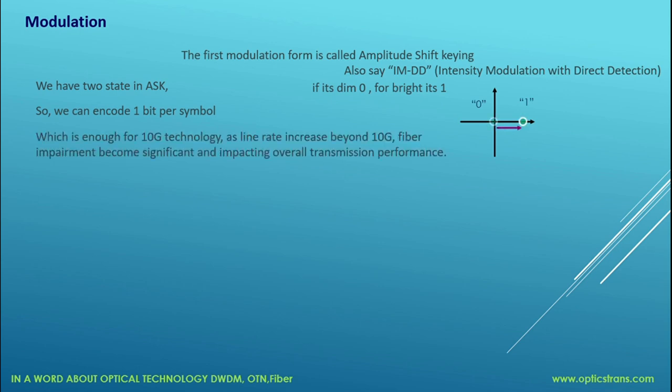As line rate increases beyond 10G, fiber impairments such as chromatic dispersion, polarization mode dispersion, optical noise, and nonlinear effects become significant and impact overall transmission performance. To overcome these and increase transmission performance, we move to another modulation scheme called Phase Shift Keying (PSK) that was introduced to improve optical transmission performance.